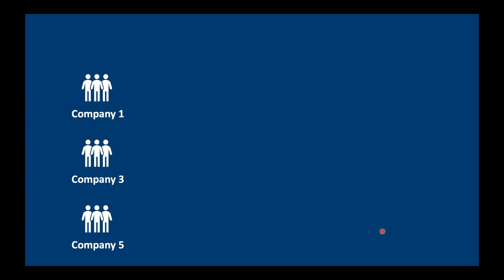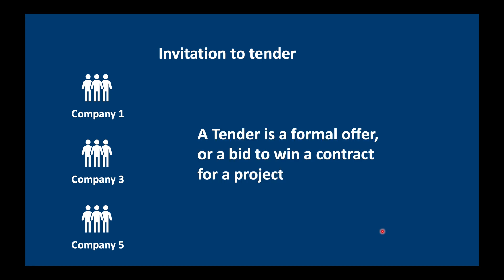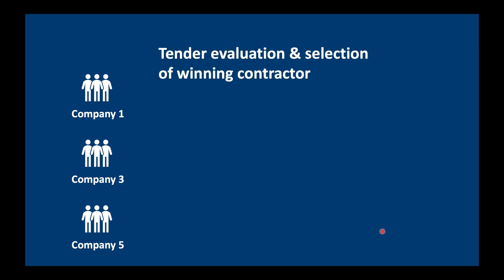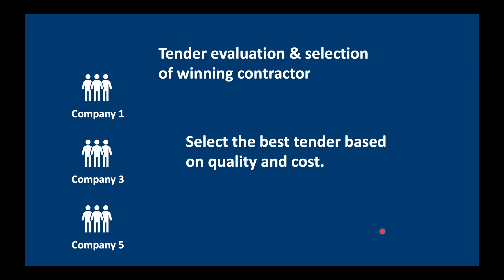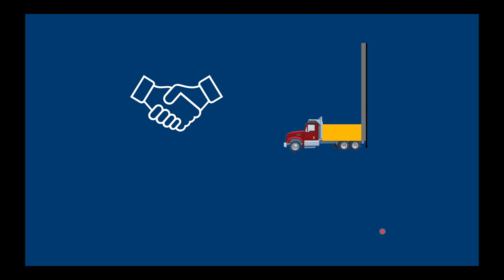Once we've selected our preferred list of contractors, we're going to invite them to tender. A tender is a formal offer or a bid to win a contract for a project. These tenders are evaluated by our tender evaluation committee and we select the winning contractor. We want to base our decision on quality and cost — not just cost. Don't just pick the cheapest one; you've also got to make sure that they can do the job.